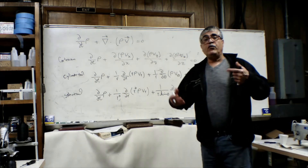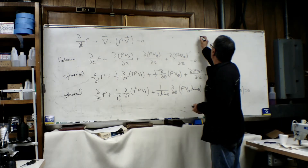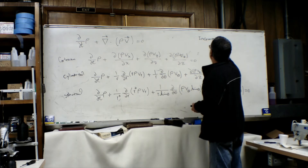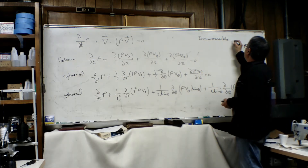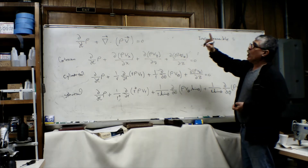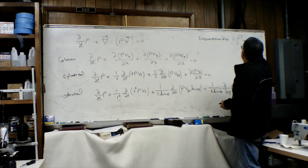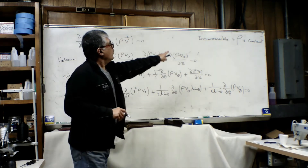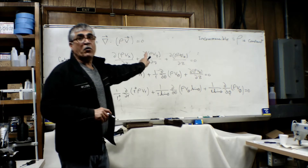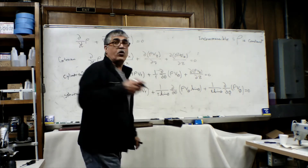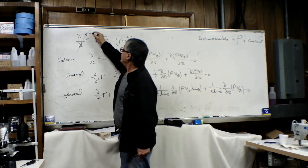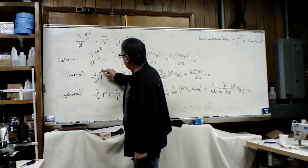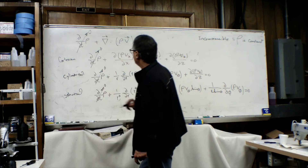Now, if our fluid is incompressible — incompressible means our density rho is constant. So our density will be constant in incompressible fluids. When rho is constant, then the partial derivative of rho with respect to time is zero, since the derivative of a constant is zero. So all that portion will be zero.